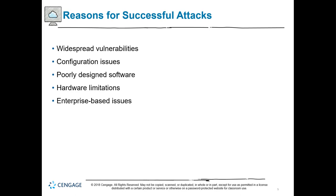Sometimes attacks succeed because the attacker is determined — if they want to get in, they eventually will. The goal should be to make it hard enough that they lose interest. Another major reason attacks succeed is that defenders don't always understand how attackers get in, so they fail to defend those pathways. Social engineering is definitely increasing as an attack vector.